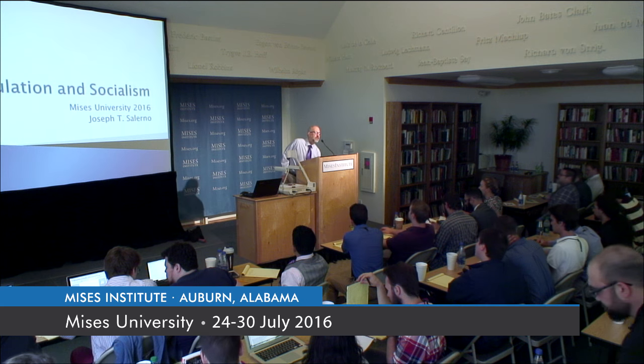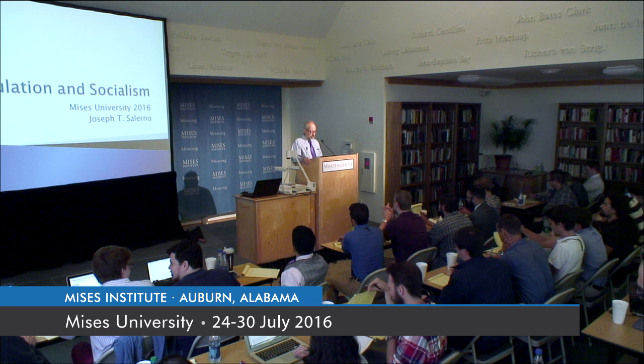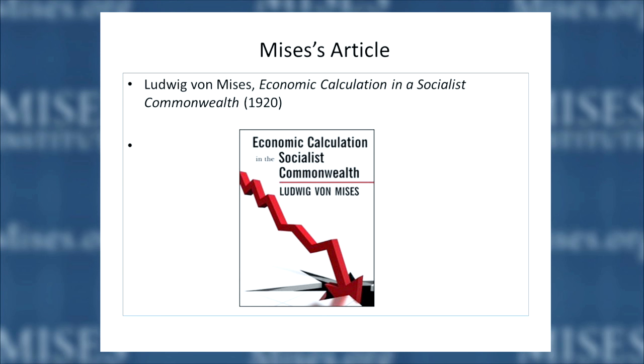My topic this morning is calculation and socialism, and I want to start by bringing to your attention a very important article — probably the most important economics article written in the 20th century — and that's the article by Ludwig von Mises, which appeared in 1920 in German, wasn't translated until 1934 into English, and it's called Economic Calculation in the Socialist Commonwealth. We have a copy of it as a pamphlet, and I highly recommend the epilogue by a modern Austrian economist.